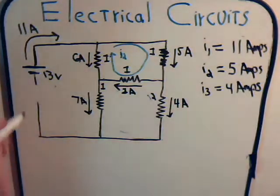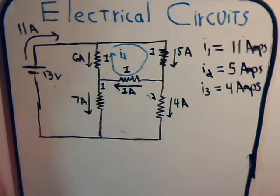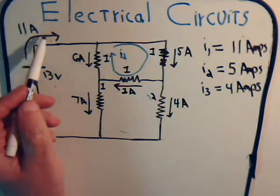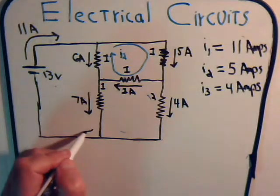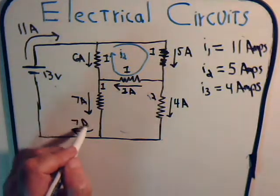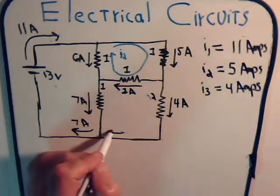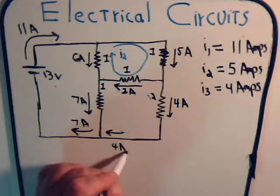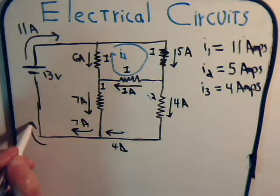So there it is. Notice we had 11 amps coming into the circuit, and here we have 7 amps, and from here 4 amps, so we have 11 amps returning.